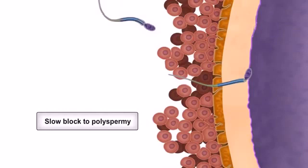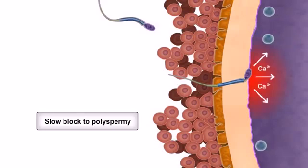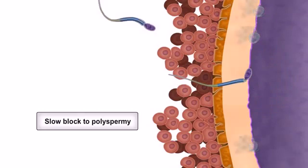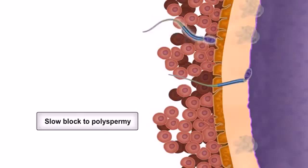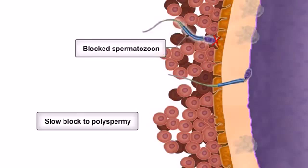Slow block to polyspermy is also stimulated by this depolarization. During slow block to polyspermy, a wave of intracellular calcium is released, causing small cortical granules beneath the oocyte membrane to release their contents, rendering ZP3 inactive and making the zona pellucida impermeable.